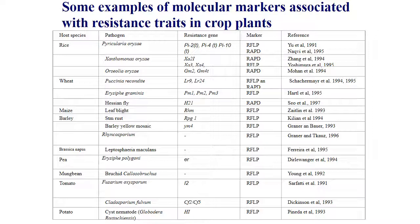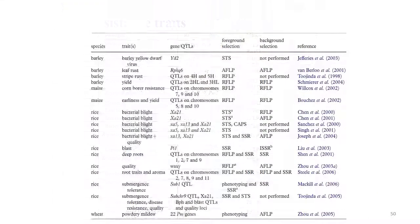In wheat for rust: LR9 and LR24 for leaf rust. For Erysiphe graminis (powdery mildew): PM1, PM2, PM3. For Hessian fly: H21. In maize for leaf blight: RHM. In barley for stem rust: RPG1. For barley yellow mosaic: YM4. In tomato for Cladosporium fulvum: CF2 to CF5. For Fusarium oxysporum: I2.